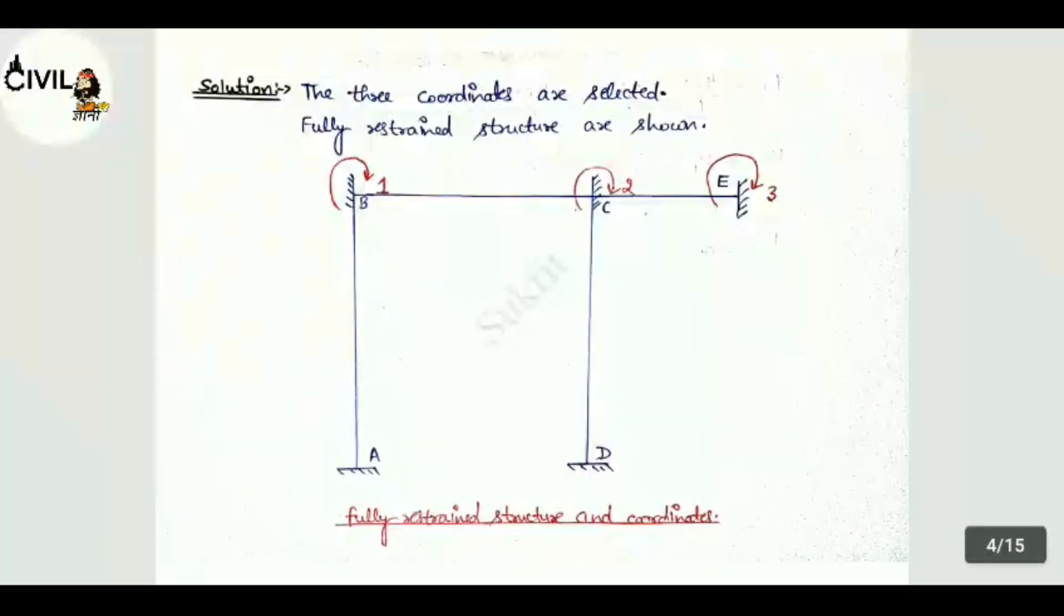See the solution. We will select three coordinates and then we will make it fully restrained, like the beam and truss. The three coordinates selected are B, C and E. And we will make it fully restrained structure and fixed. See fully restrained structure and coordinates. The coordinates are shown here: 1, 2 and 3.